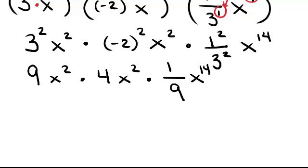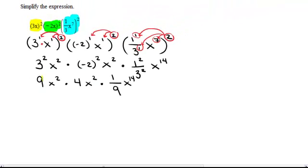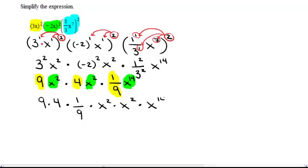Now all of the numbers that are in front, I can multiply the numbers with the numbers. And then I can put my variables together since they all have the same base, and I can use the product rule for exponents on those. So we're going to have 9 times 4 times 1 ninth times x squared times x squared times x squared times x to the 14th power.